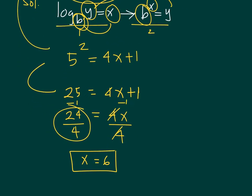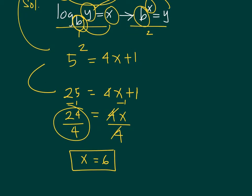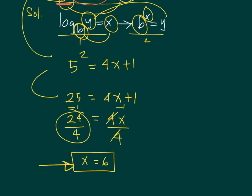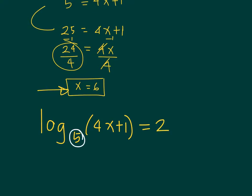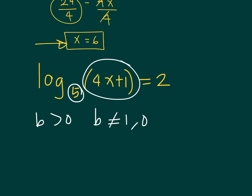Why do we say 'possible solution'? For logarithmic equations, it's very important to check whether the value we get is acceptable. Going back to our equation, the base b must be positive, not equal to zero or one. Similarly, the argument 4x+1 must always be positive and cannot equal zero.